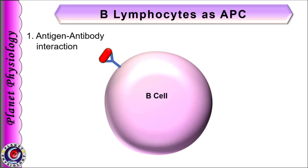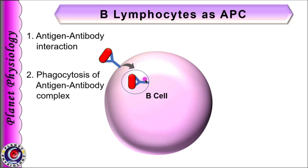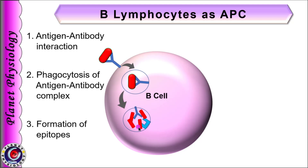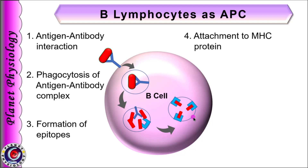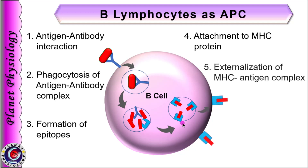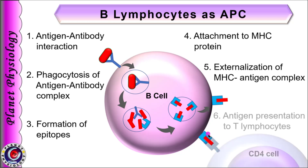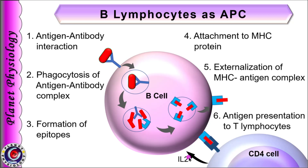When B-lymphocytes encounter foreign antigens, the surface antibodies on B-cells immediately form a complex with them and this complex undergoes receptor-mediated endocytosis. It is then broken into smaller fragments, i.e., epitopes, which are then attached to MHC proteins within the vesicles. This complex is then externalized and the MHC-antigen complex appears on the surface of B-cells, which is then detected by CD4 cells or helper T-cells. Helper T-cells in turn secrete various cytokines, especially interleukin-2, which further activate B-lymphocytes.